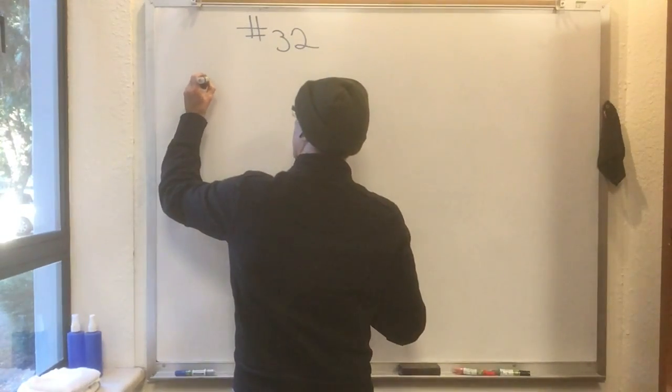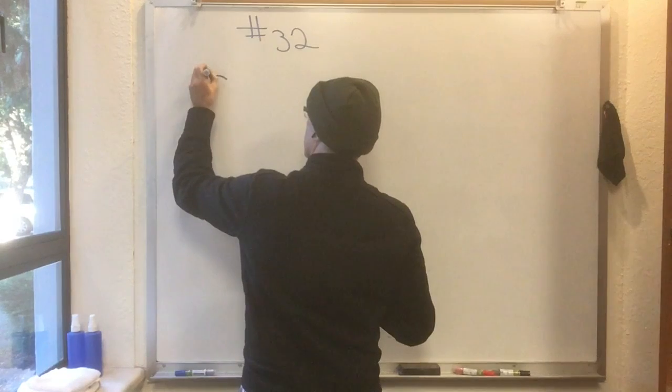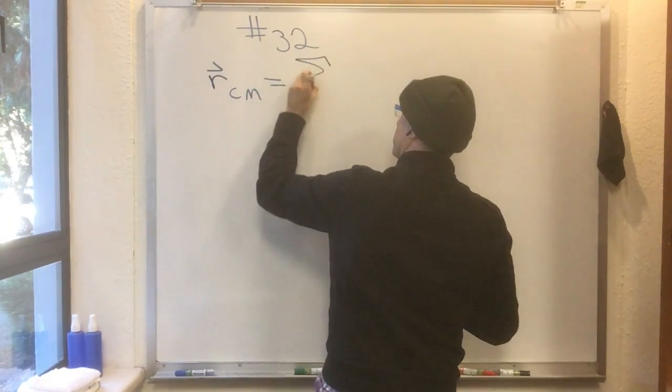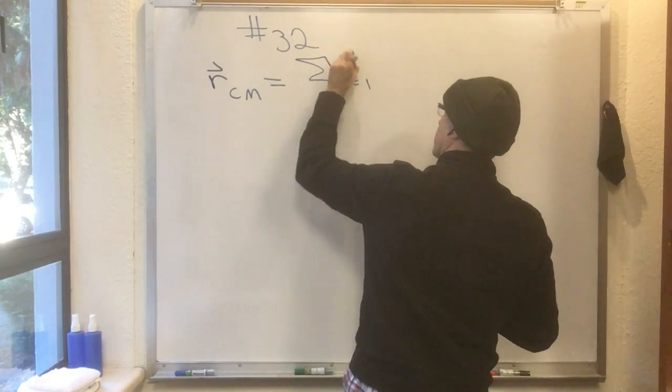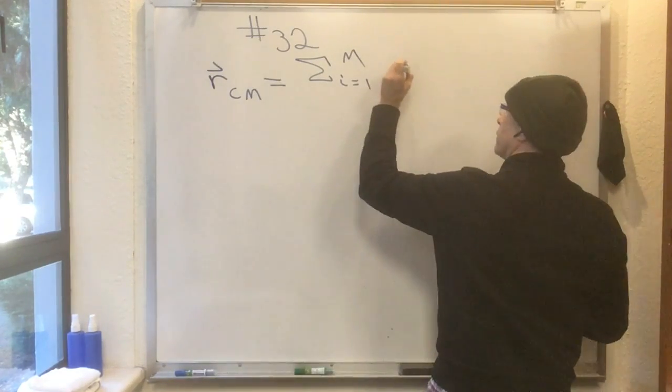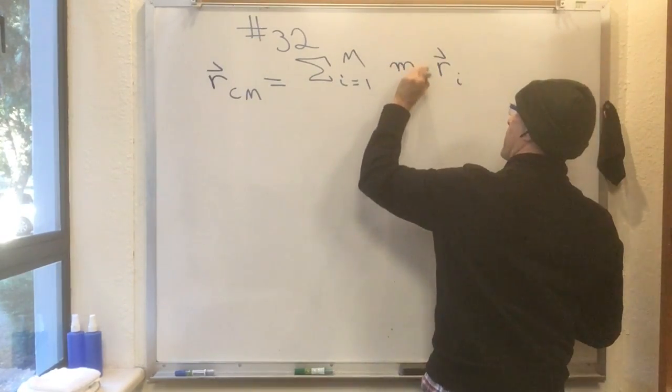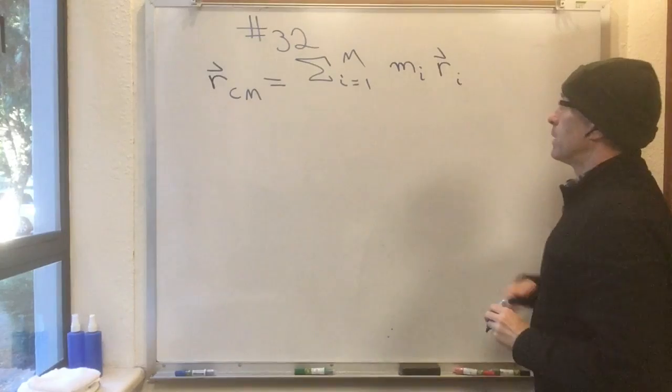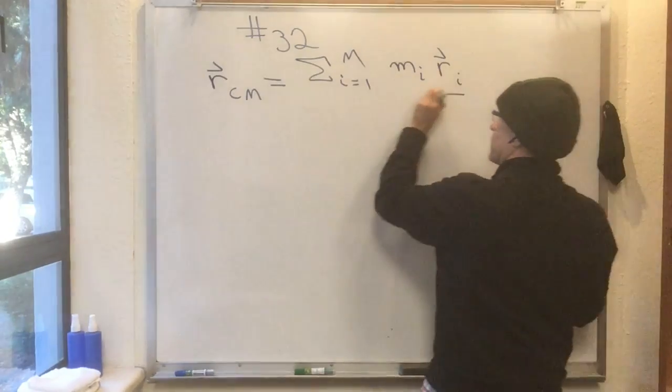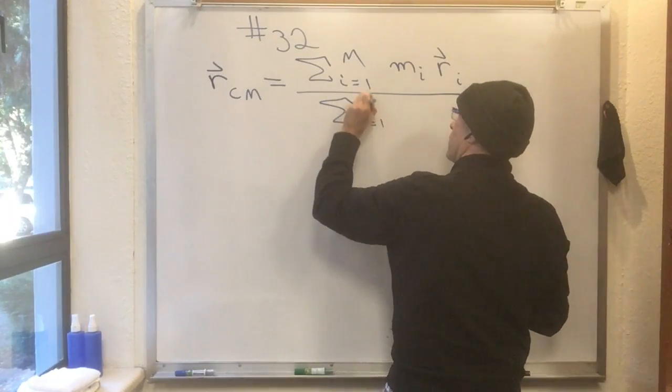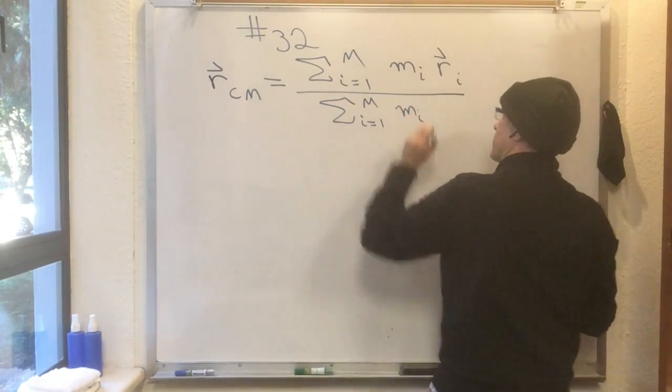In the last flipped mini lecture, I showed you that the position of the center of mass is equal to the sum, i equals 1 to m, of the position of the i-th particle times the mass of the i-th particle. Then, in the denominator, you have to put sum, i equals 1 to m, of just the mass of the i-th particle.